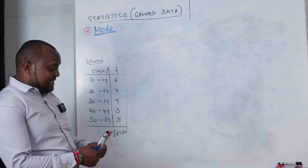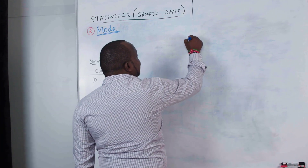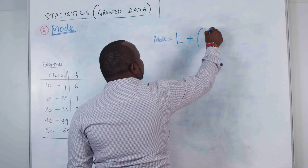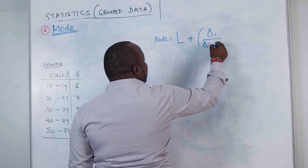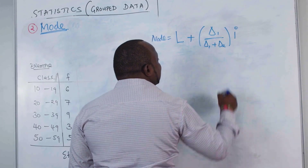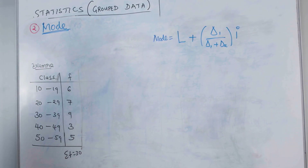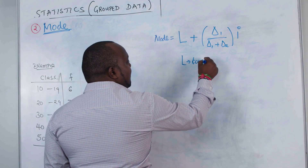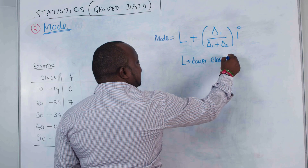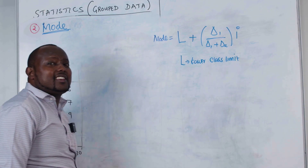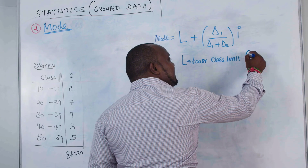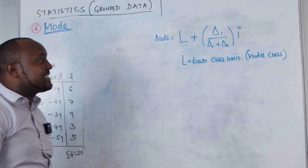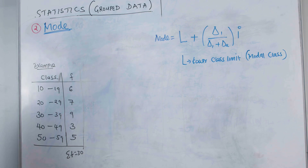The formula for calculating mode is: Mode = L + (Δ1 / (Δ1 + Δ2)) × I. Here, L is the lower class limit — specifically, the lower class limit of the modal class.